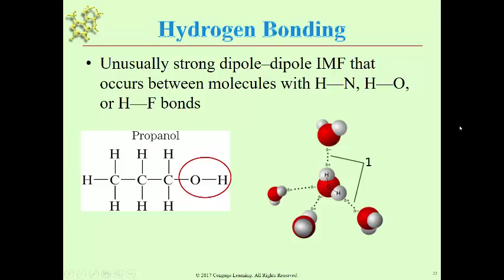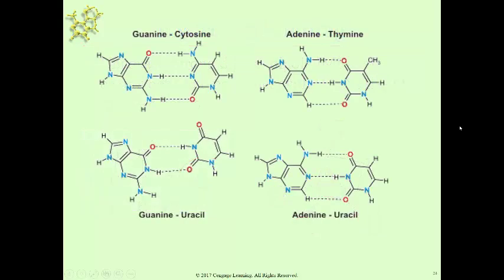We'll give an example in DNA, where the base pairs hydrogen bond with one another. You can see these interactions: GC pairing, AT pairing, GU pairing, et cetera. We have a lone pair — not shown — but nitrogen with three bonds will have a lone pair, accepting a hydrogen bond. Up here, we have a double-bond oxygen, so the O has lone pairs; it can accept a hydrogen bond, but it can't be the creator of that hydrogen bond.